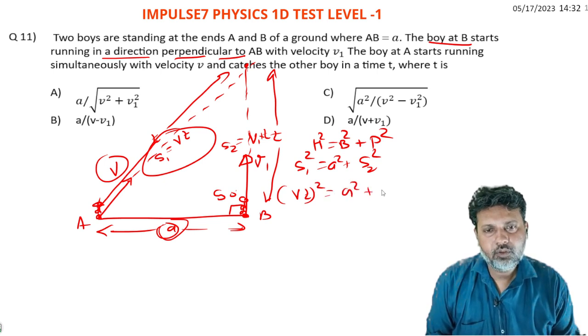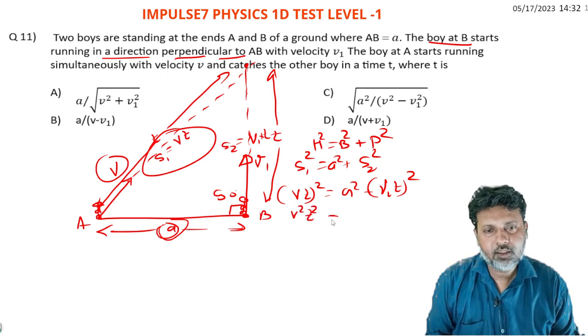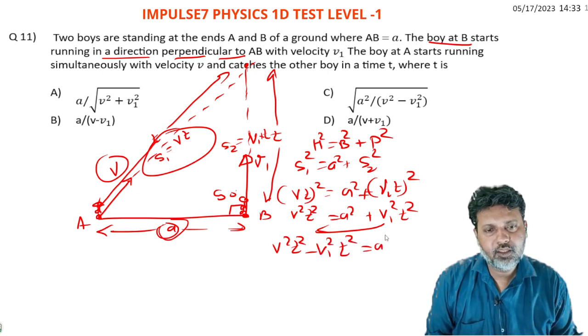Substituting, v squared t squared equals a squared plus v1 squared t squared. Rearranging: v squared t squared minus v1 squared t squared equals a squared. Factoring out t squared: t squared times (v squared minus v1 squared) equals a squared.